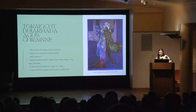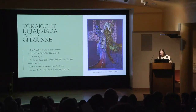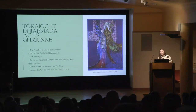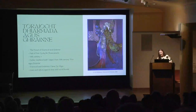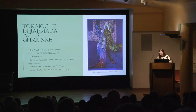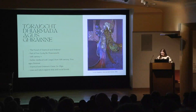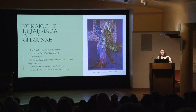Tóraíocht Dhiarmada agus Ghráinne appears in manuscripts from about the 16th century onwards, with an earlier 10th century version. It essentially tells of how the princess of Ireland, Gráinne, refuses her arranged marriage to the aged Fionn Mac Cumhaill — one of Ireland's greatest mythical heroes — and elopes instead with one of his more age-appropriate and dashingly handsome warriors, Diarmuid. The couple are subsequently chased across Ireland by humiliated Fionn and his warriors, until Diarmuid's foster father Aengus brokers a truce and Fionn eventually relents.